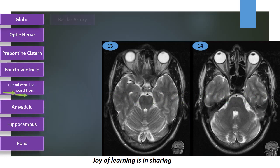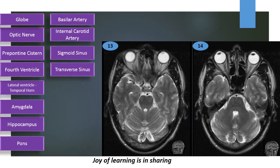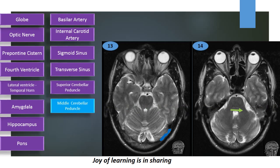Pons, basilar artery in the prepontine system, internal carotid artery in the cavernous sinus, sigmoid sinus, transverse sinus, superior cerebellar peduncle, middle cerebellar peduncle.